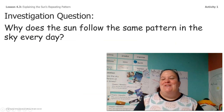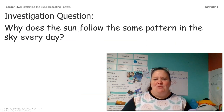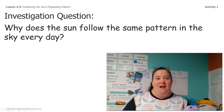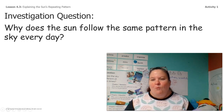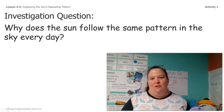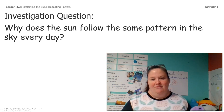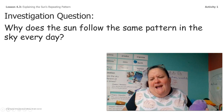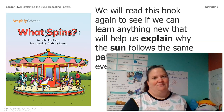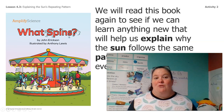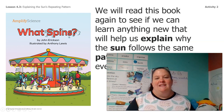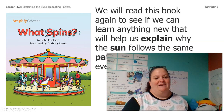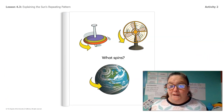Now that we know the answer to that question, we're going to move on to the next question. Not just that the sun follows the same pattern, but why does the sun follow that same pattern in the sky every day? Why does that happen? We're going to go back to our book, "What Spins?", to see if we learn anything new to help us explain why the sun follows the same pattern in the sky.